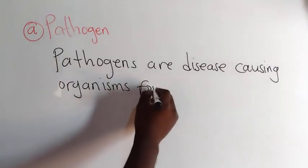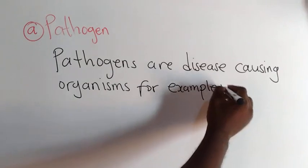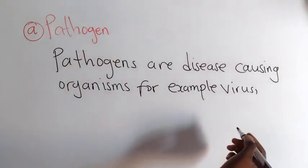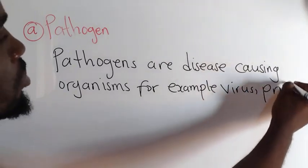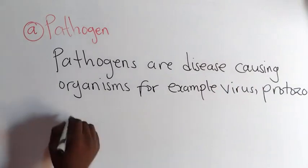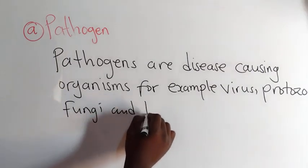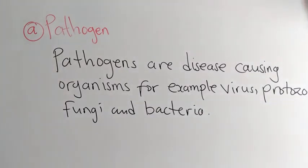For example, we are talking of a virus. We are also talking of protozoa. We are also talking of fungi. We are also talking of bacteria. So these are examples of pathogens. Pathogens are disease-causing organisms — for example, a virus, protozoa, fungi, and bacteria.